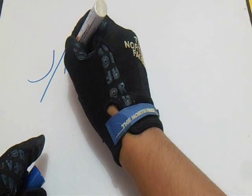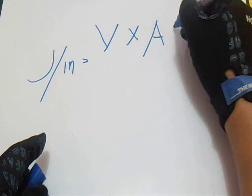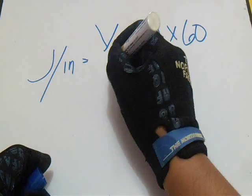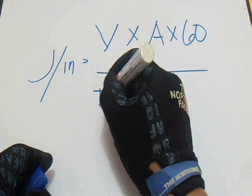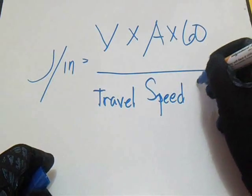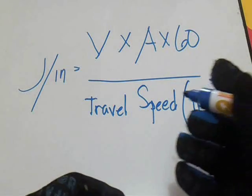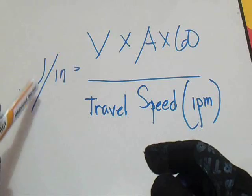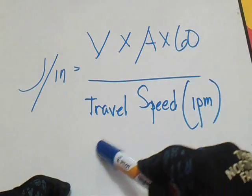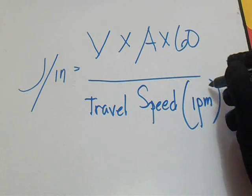So the formula of welding heat input is: J per inch equals Volt × Ampere × 60 over Travel Speed (IPM). Okay, so this is our formula of welding heat input — J per inch equals Volt × Ampere × 60 over Travel Speed IPM.